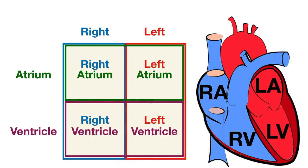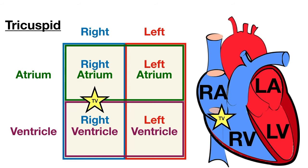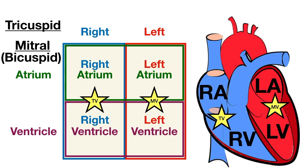Now let's move on to the four main valves. Their function is to prevent the backward flow of blood into the previous chamber. The tricuspid valve is located between the right atrium and the right ventricle — when the right ventricle squeezes and pumps blood forward, the tricuspid valve prevents backflow into the right atrium. On the left side, the mitral valve, also called the bicuspid valve, is located between the left atrium and left ventricle. Both are referred to as atrioventricular valves.